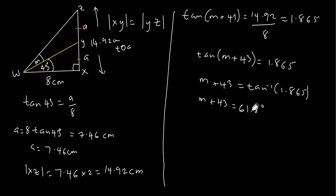Now let's make m the subject from this equation, so we have m plus 43 minus 43 is equal to 61.8 minus 43. This will cancel, so this is equal to 18.8 degrees. So now the value of m is equal to 18.8 degrees, so this is our final answer.